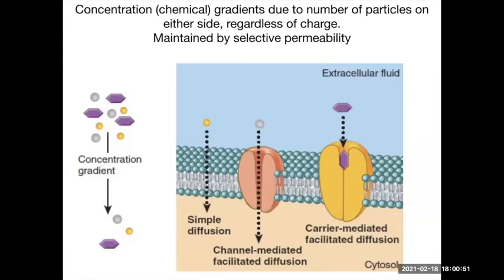All that selective permeability creates concentration or chemical gradients. These naturally want to move from high to low but are stopped or influenced by the selective permeability of the membrane. If something has a concentration gradient outside and can get through a channel easily, it will equilibrate. But if it can't get through, you get a buildup on one side. So you can maintain a high level of certain molecules outside and different molecules inside based on permeability, and these concentration gradients will be huge for cell functions we'll see later.